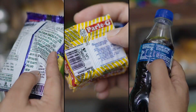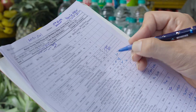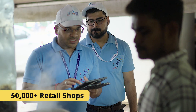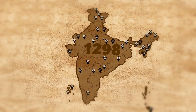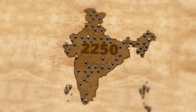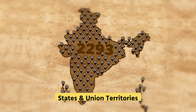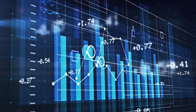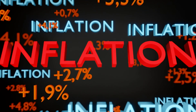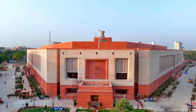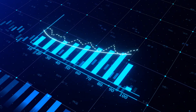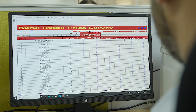The retail prices of these 299 items are collected by NSO every month from over 50,000 retail shops across 2,295 markets in India, across the states and union territories. CPI is widely used as an important macroeconomic indicator on inflation by the government and central banks for targeting inflation and for monitoring price stability.